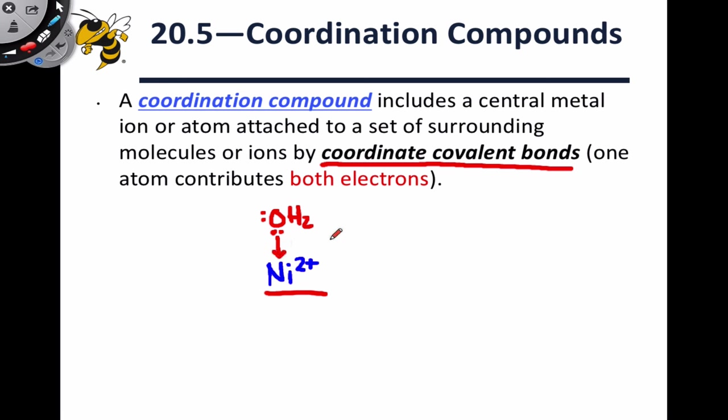So electron sharing is still going on, it's just that we think of both electrons in the bond as coming from the non-metal partner. A great example of a transition metal coordination complex is the hexa-aquo-nickel-2 ion, which contains a central Ni2+ cation surrounded by six water molecules.